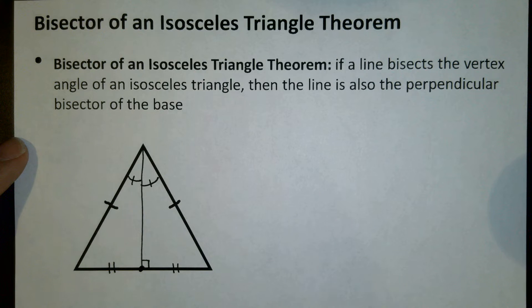So we know that these two angles are the same. We know that this is 90, which means this would also be 90. We know these two sides are the same. We know these two pieces are the same.